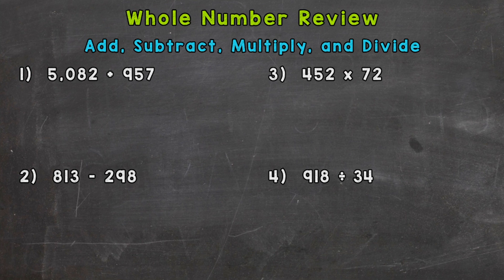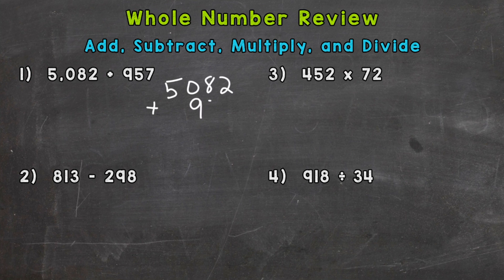For addition and subtraction, one of the most important things is getting your problem lined up properly. We need to line up our places: the ones place, the tens place, hundreds, and so on. So for this one, we have 5,082 plus 957. I have my ones place, my tens place, my hundreds, and thousands place here. Everything's lined up — now I'm ready to add.